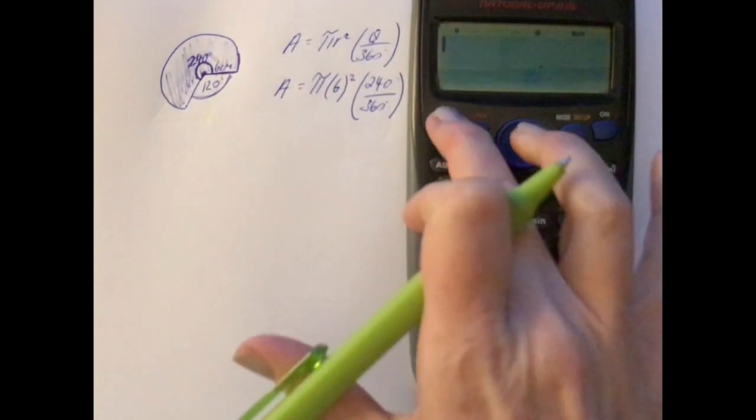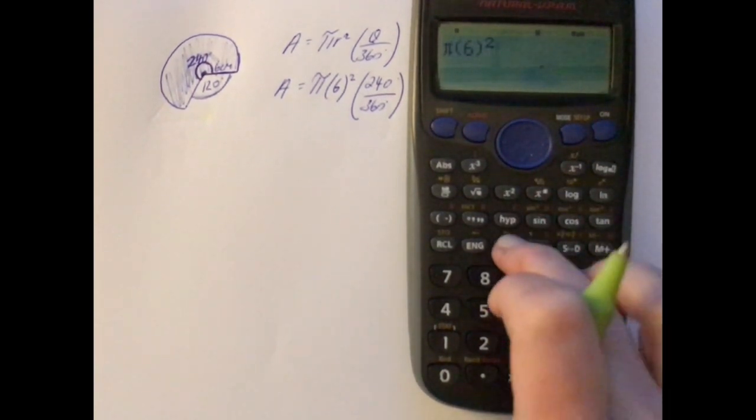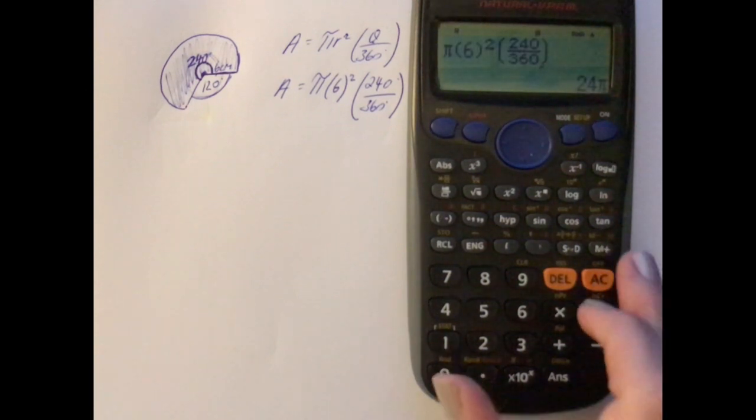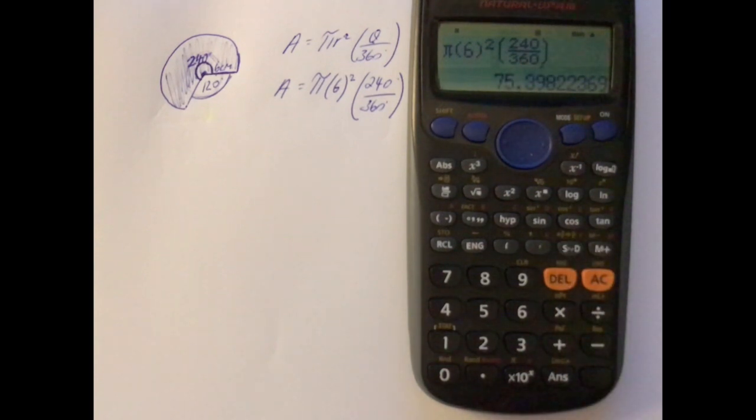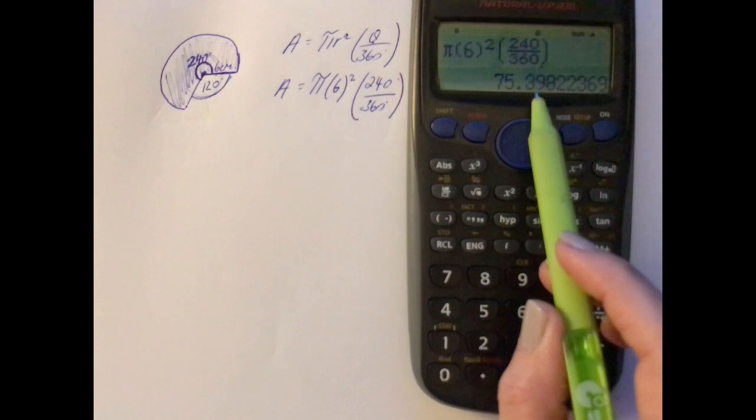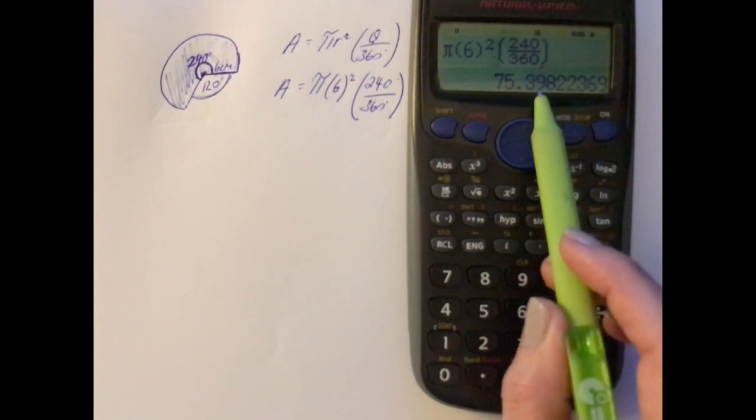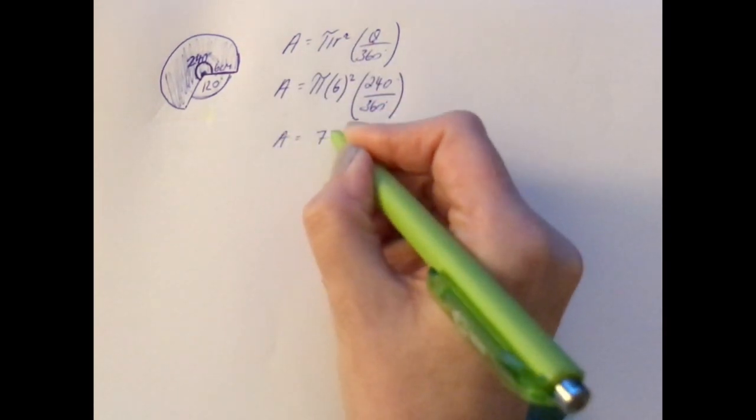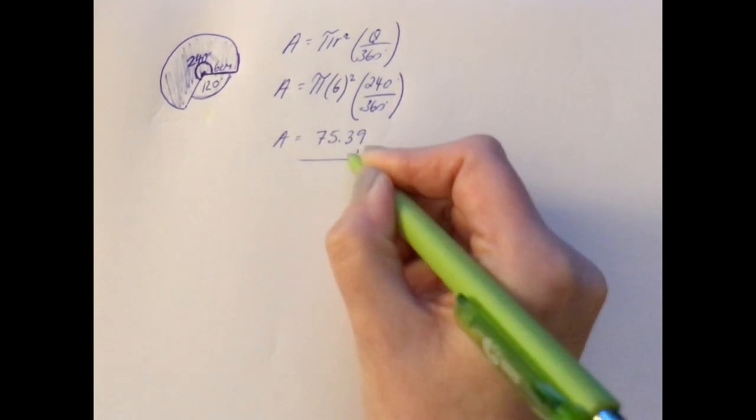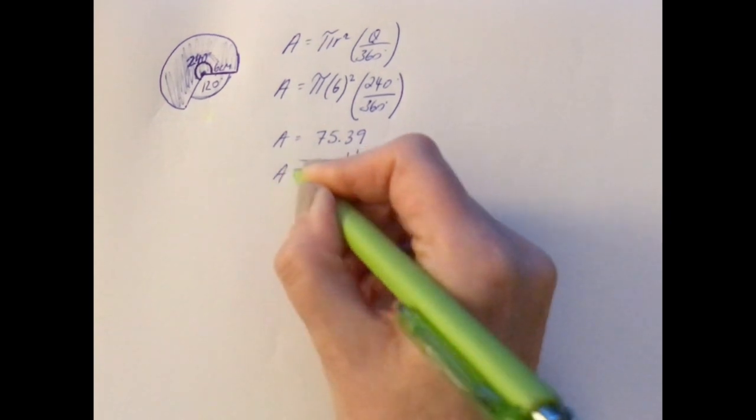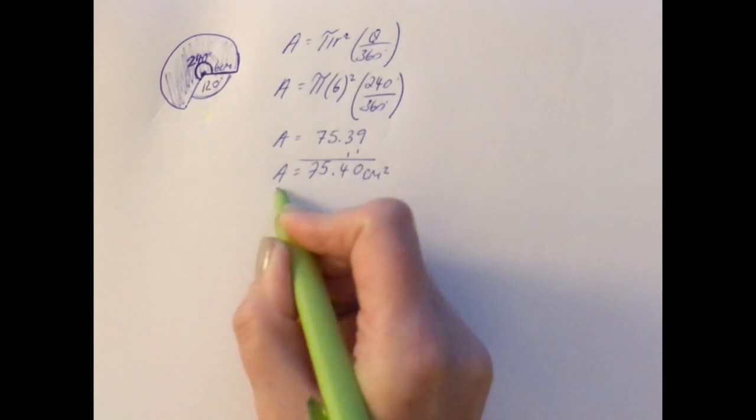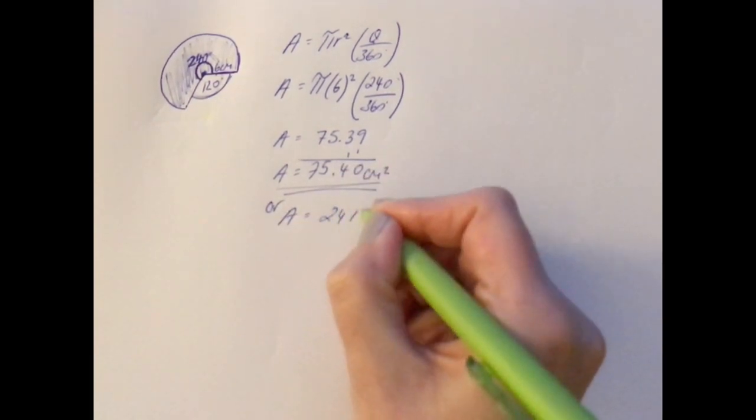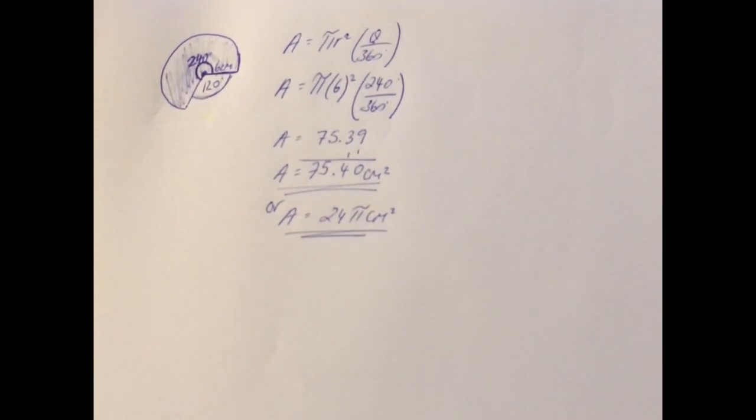So now we're going to put that in on the calculator. We're going to do shift pi bracket, 6 brackets squared, open the brackets again, put the fraction on, and we have 240 on top and 360 on the bottom, close the bracket, equals. And we get 24π. And if we want that in decimal places, we'll press the STD button, so we get 75.39. The 8 is going to bump up the 9, and it'll bump up the 9 to 10, which will have a knock-on effect, adding on 1 to the 3 as well. So we'll end up with 75.40 centimeters squared when we round that. So that's the area to two decimal places, or if they'd asked for it in terms of pi, then you would have just left it as 24π centimeters squared. So again, read the question carefully, and it depends what way they want the answer.